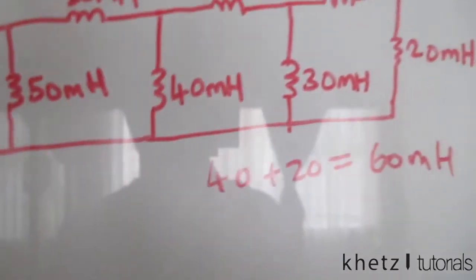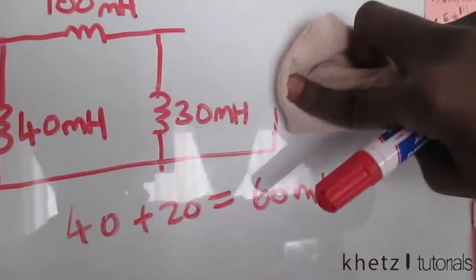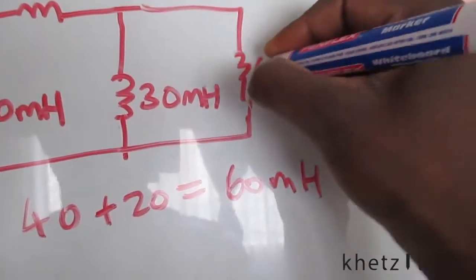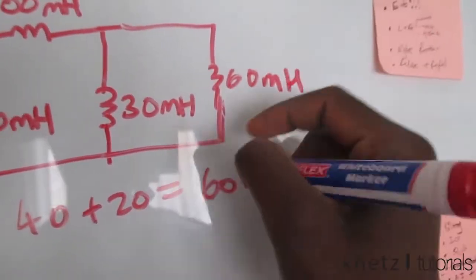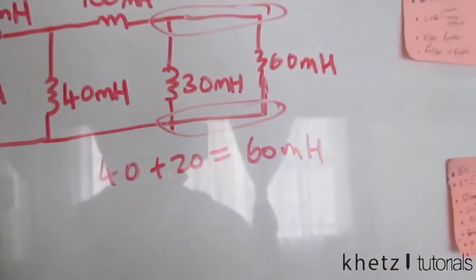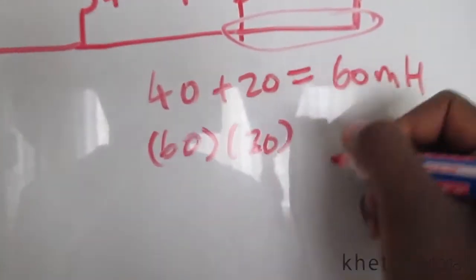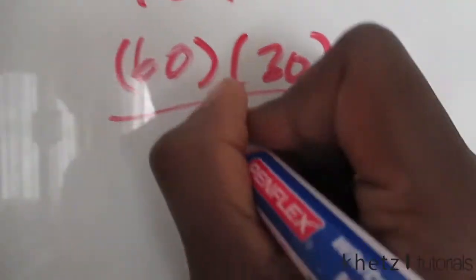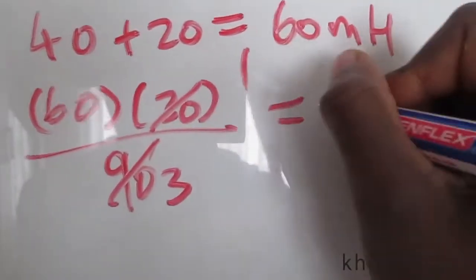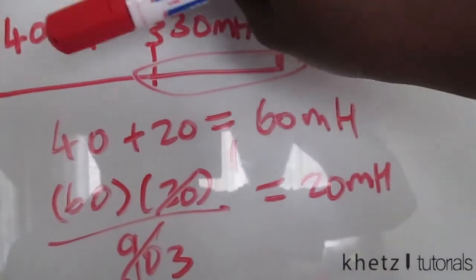Let's erase as we go along. We have the equivalent of this section, which is 60 millihenries. This 60 millihenries shares two nodes with the 30 millihenries, which means they are in parallel. Using the parallel formula: 60 multiplied by 30 divided by 60 plus 30 is 90, giving us 1800 over 90, which is 20 millihenries.